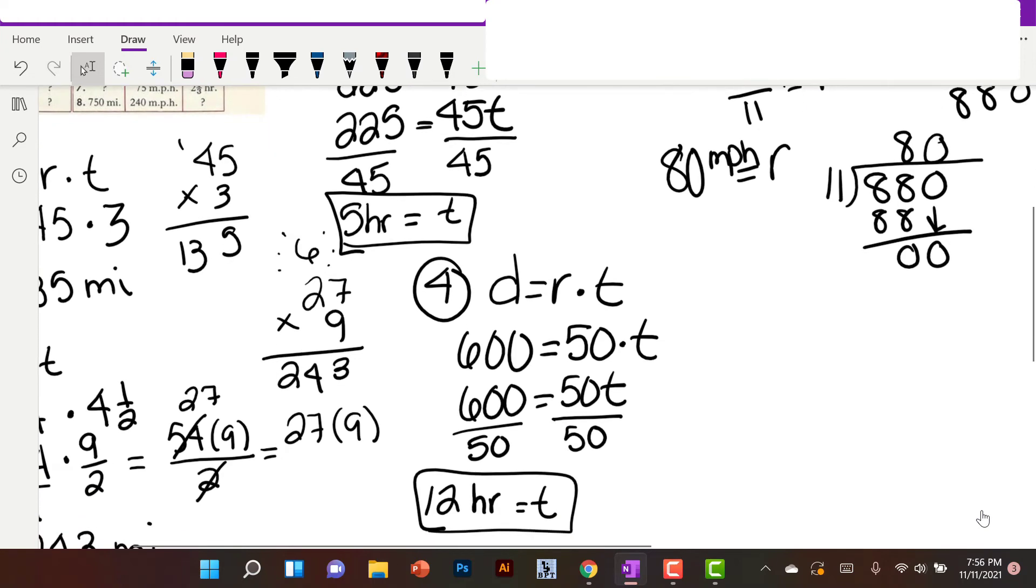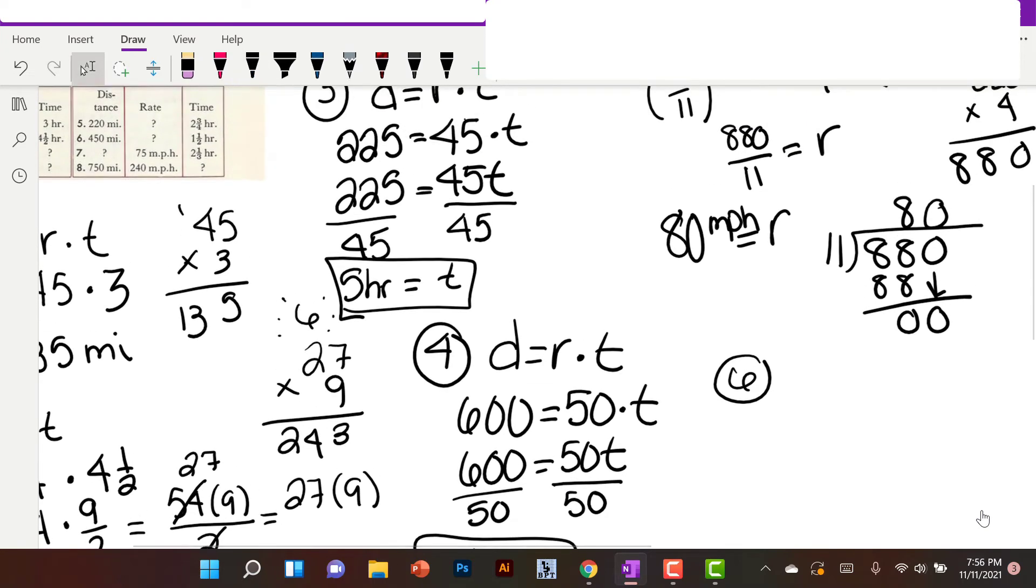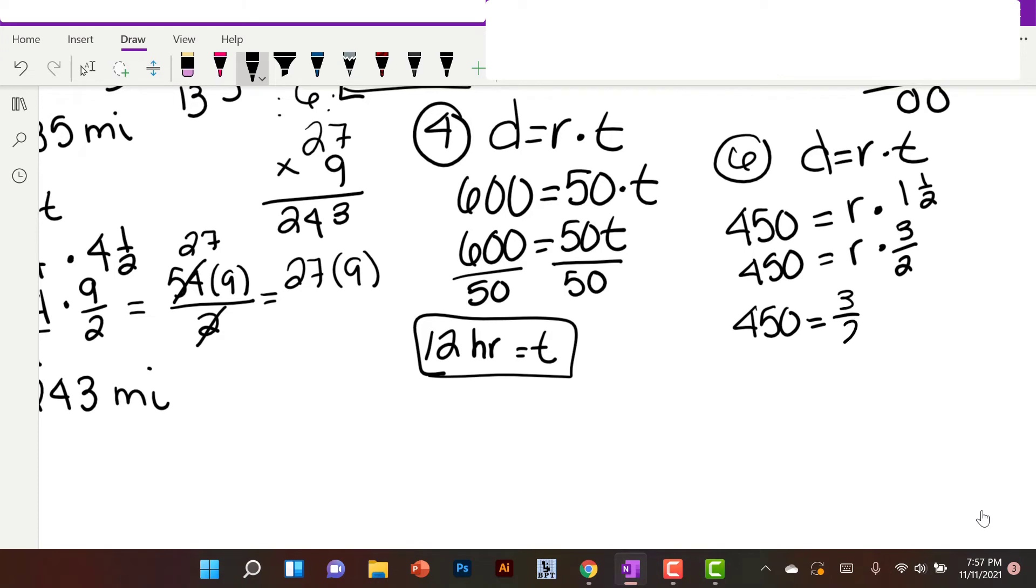Let's do number 6. Distance equals rate times time. The distance is 450 miles. We don't know the rate. They give us an hour and a half. We're going to do the same thing. 450 equals r times 2 times 1 is 2, plus 1 is 3. 3 halves. I'm going to rewrite it: 450 equals 3 halves r. We're going to multiply by the reciprocal on both sides. 450 times 2 gives us 900.